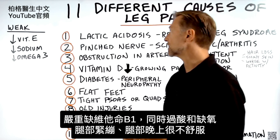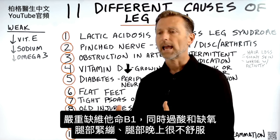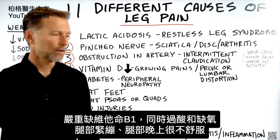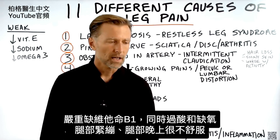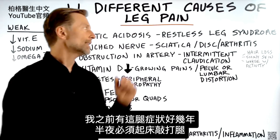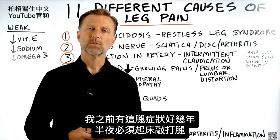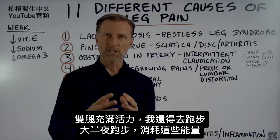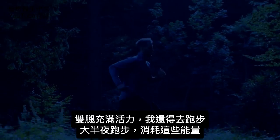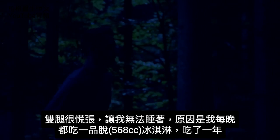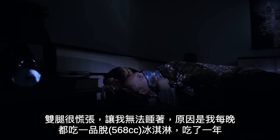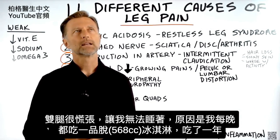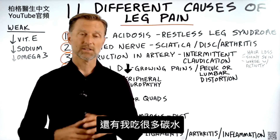What's happening is you're getting a combination of acidity and lack of oxygen — hypoxia — and your legs are going to be very restless. You're going to feel very uncomfortable in the legs, especially at night. I had this condition for quite some years. I would literally get up in the middle of the night and have to pound my legs because they were so full of energy, and I had to go running. A pint of Ben and Jerry's ice cream every night for probably over a year caused this condition, not to mention the other carbs I was consuming.